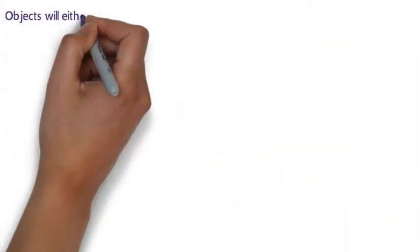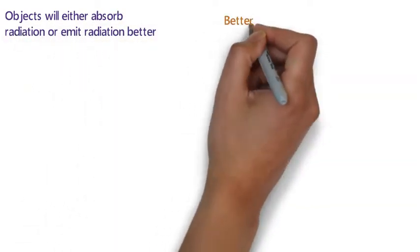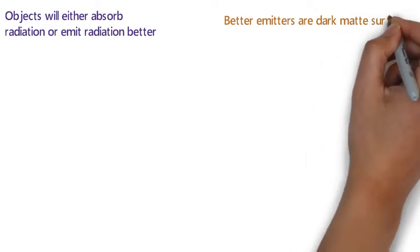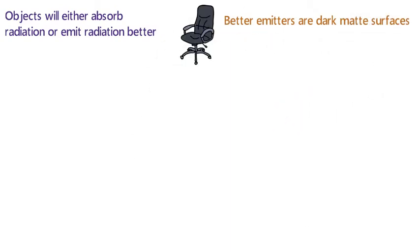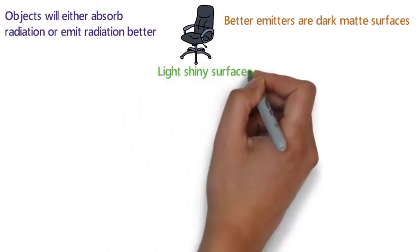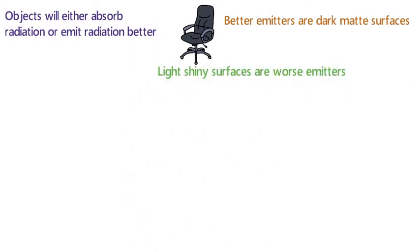The next section of this video is for higher tier students only. Certain properties of objects can determine whether an object absorbs radiation better or emits it better. An object with a dark matte surface will be a better emitter than an object with a light shiny surface.